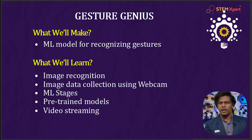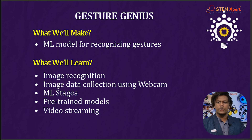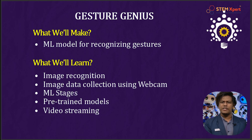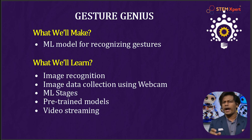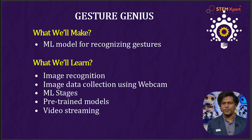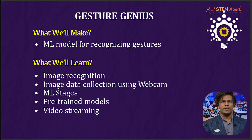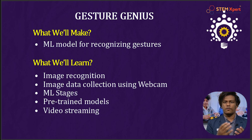We'll be using Scratch through ML for Kids — Machine Learning for Kids — and we will be learning image recognition. What does that mean? Simply put, it's all about identifying whatever is inside an image — it could be an object, a place, text, whatever. That's what image recognition is about.